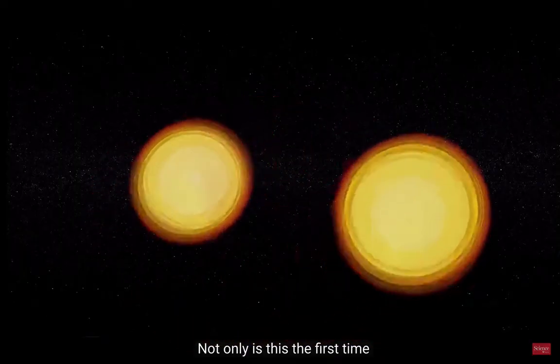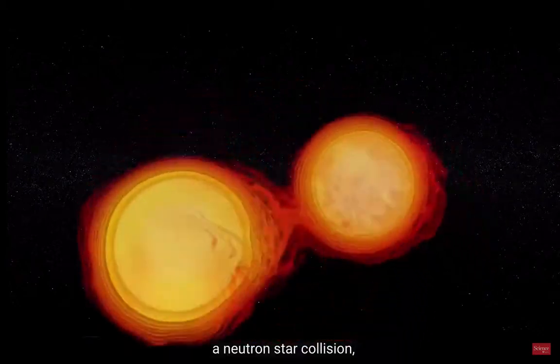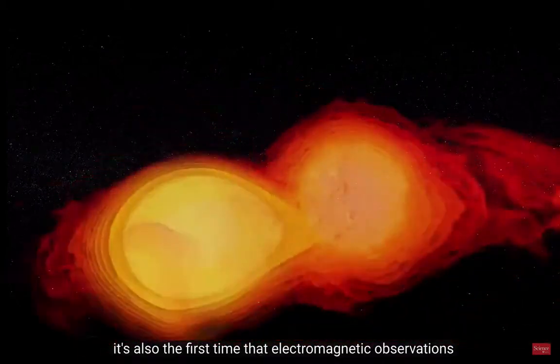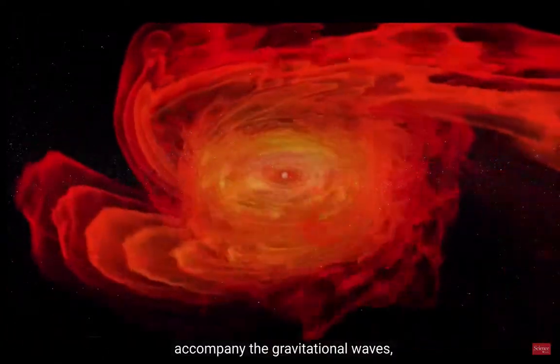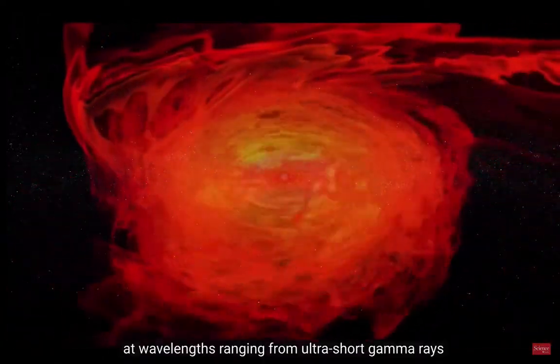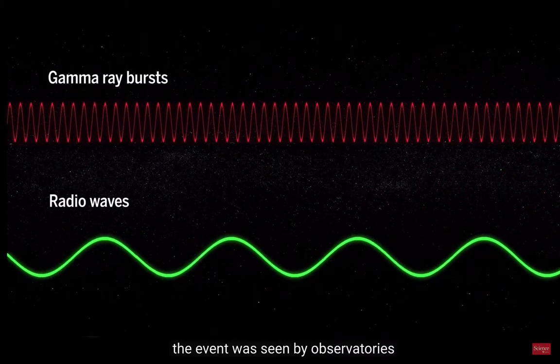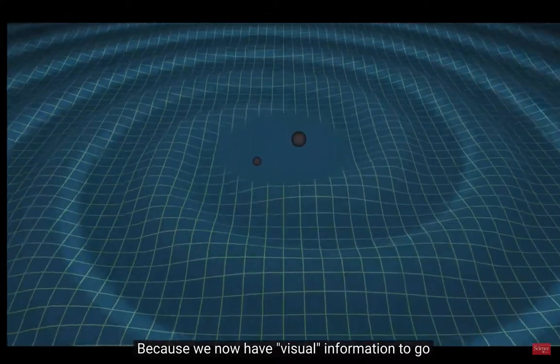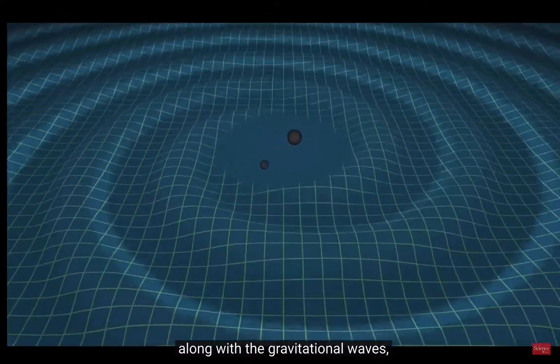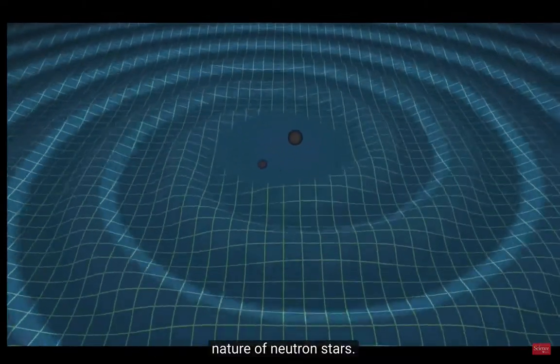Not only is this the first time LIGO has detected gravitational waves from a neutron star collision, it's also the first time that electromagnetic observations from conventional telescopes accompany the gravitational waves. At wavelengths ranging from ultra-short gamma rays to very long radio waves, the event was seen by observatories around the world. Because we now have visual information to go along with the gravitational waves, new discoveries are being made about the nature of neutron stars.